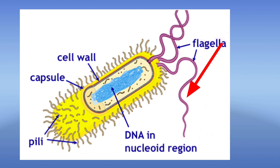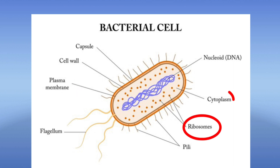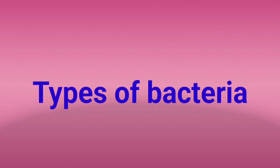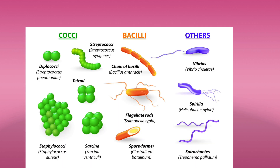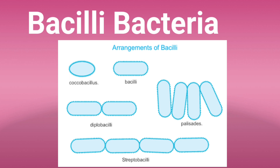Bacteria are made up of flagellum, the plasma membrane, the ribosomes, the cytoplasm, and the nucleoid, which is the genetic material of DNA and RNA. Types of bacteria: there are several types of bacteria. Bacilli bacteria — they are long,